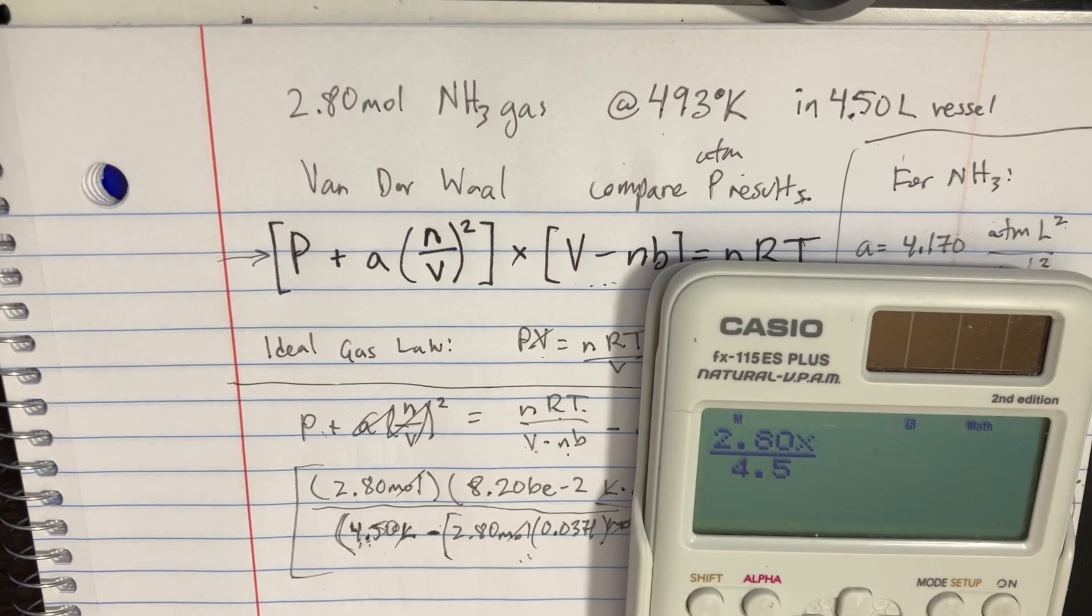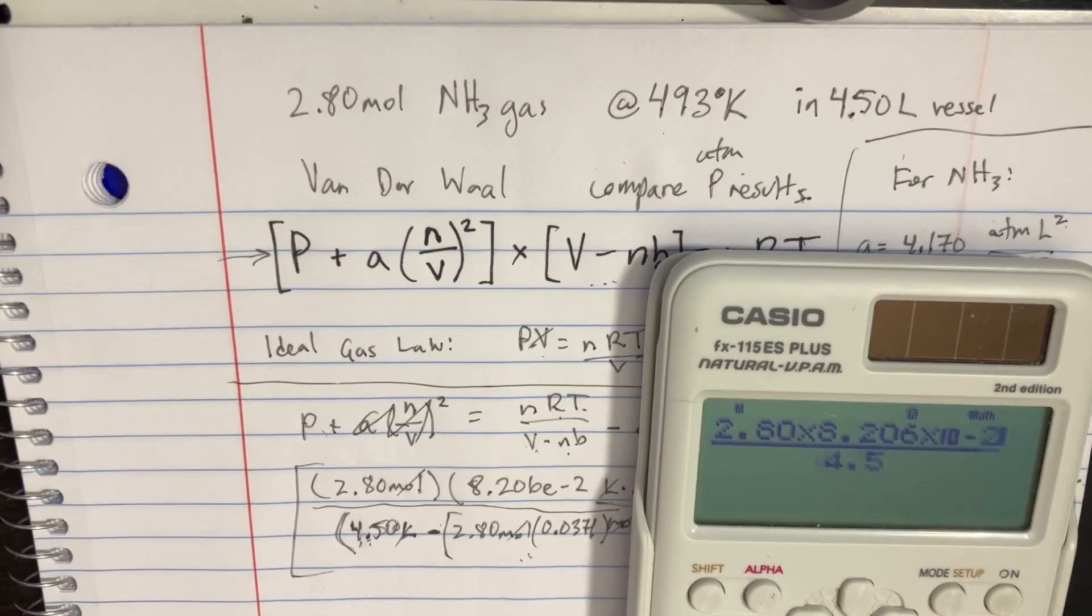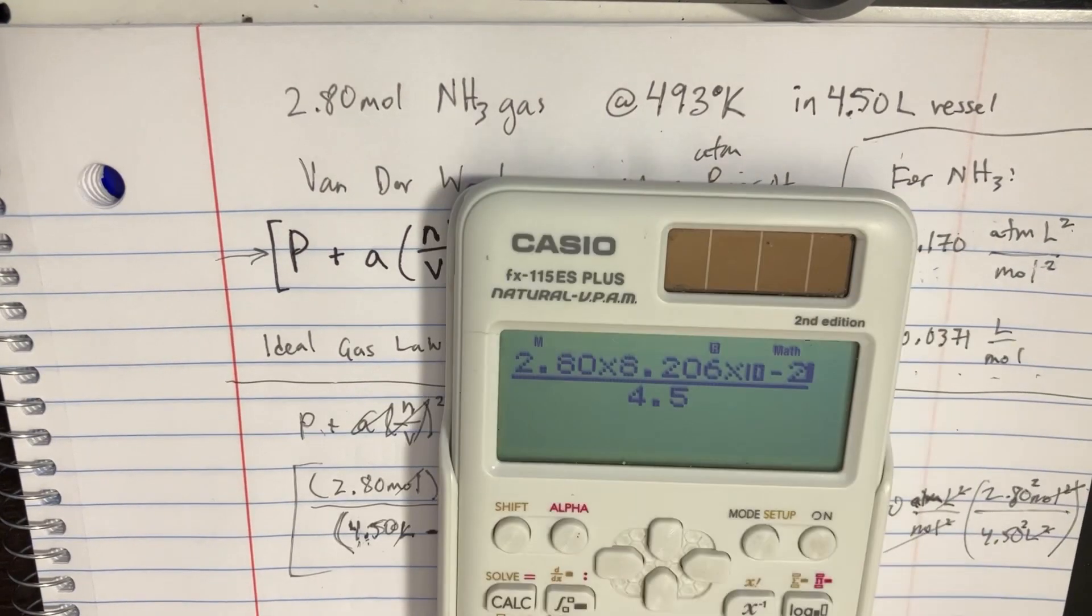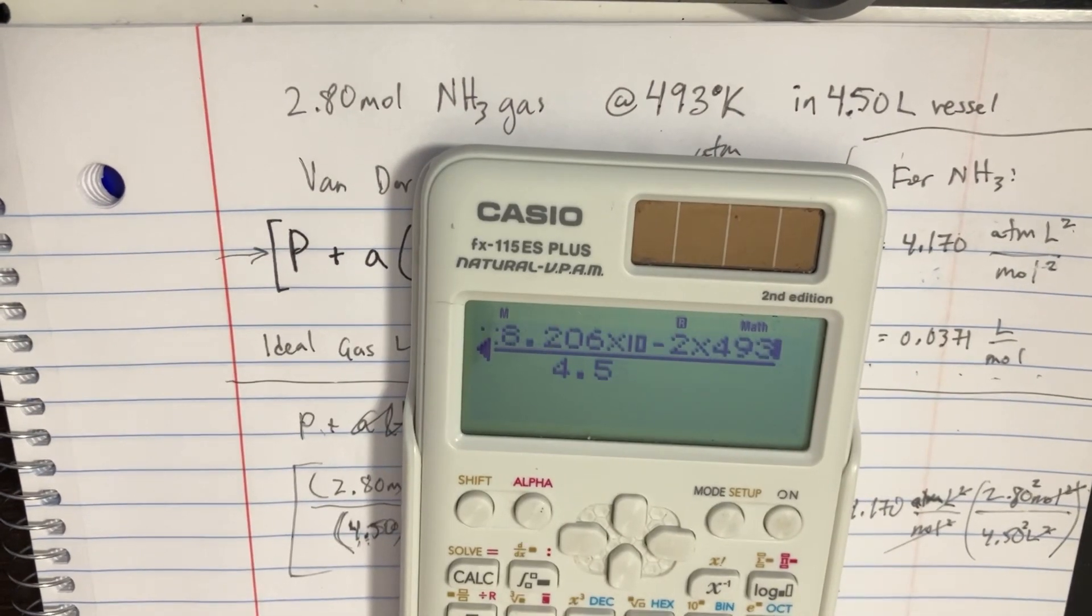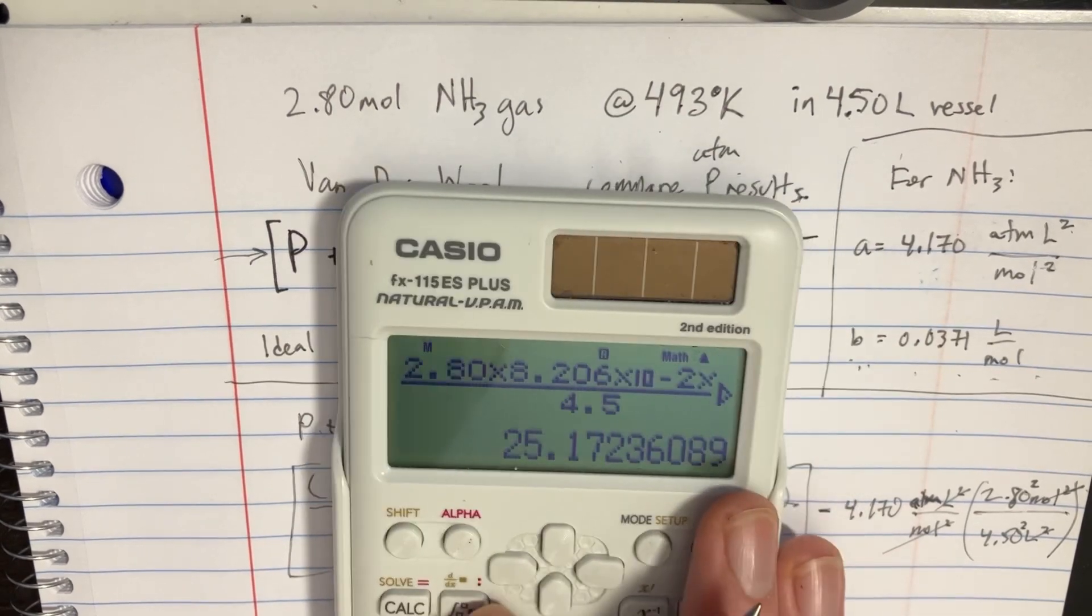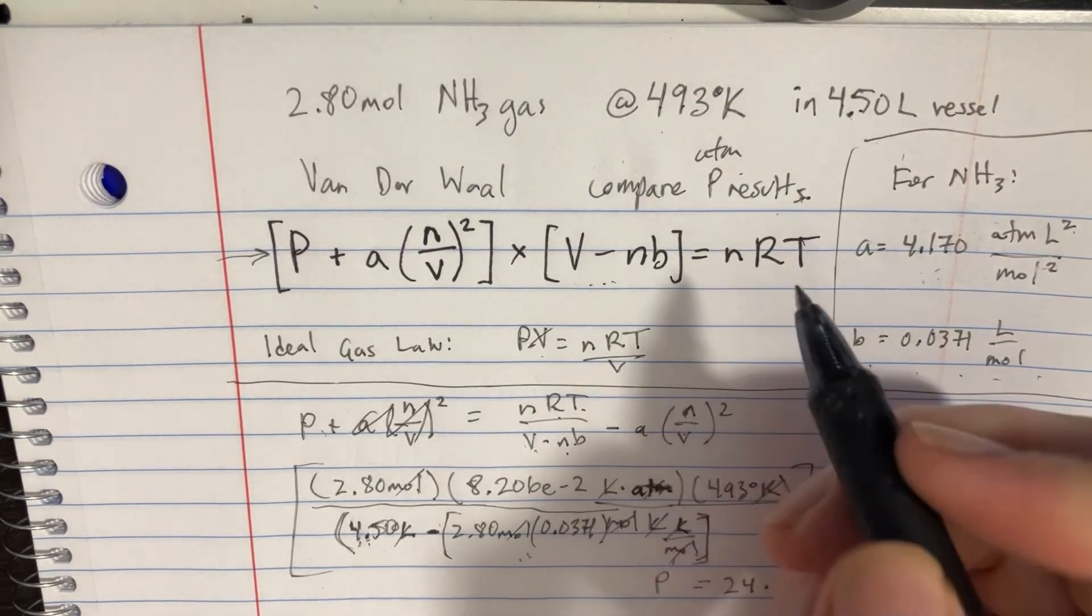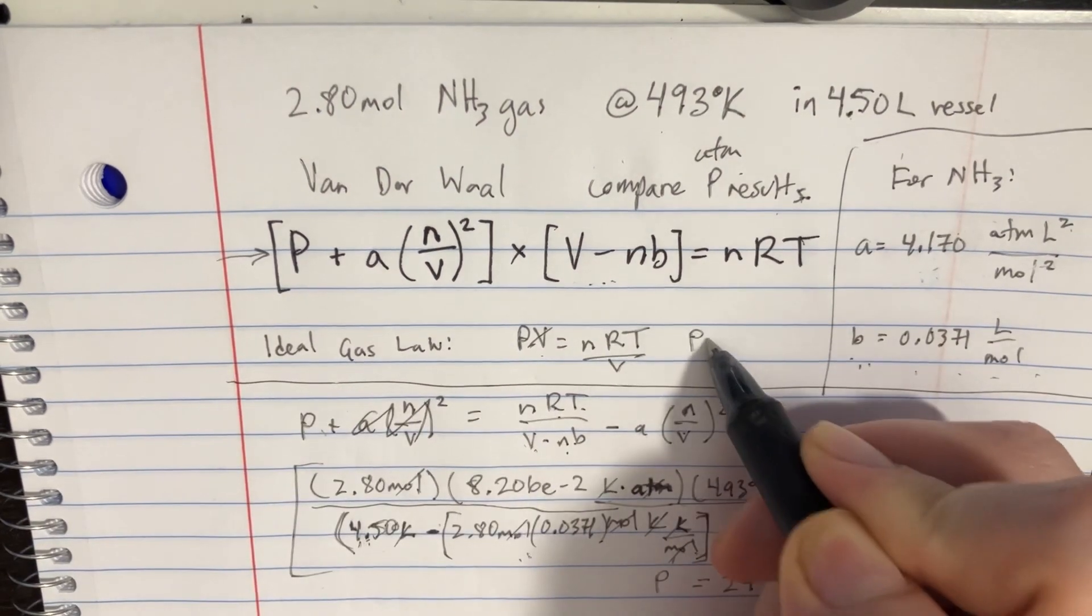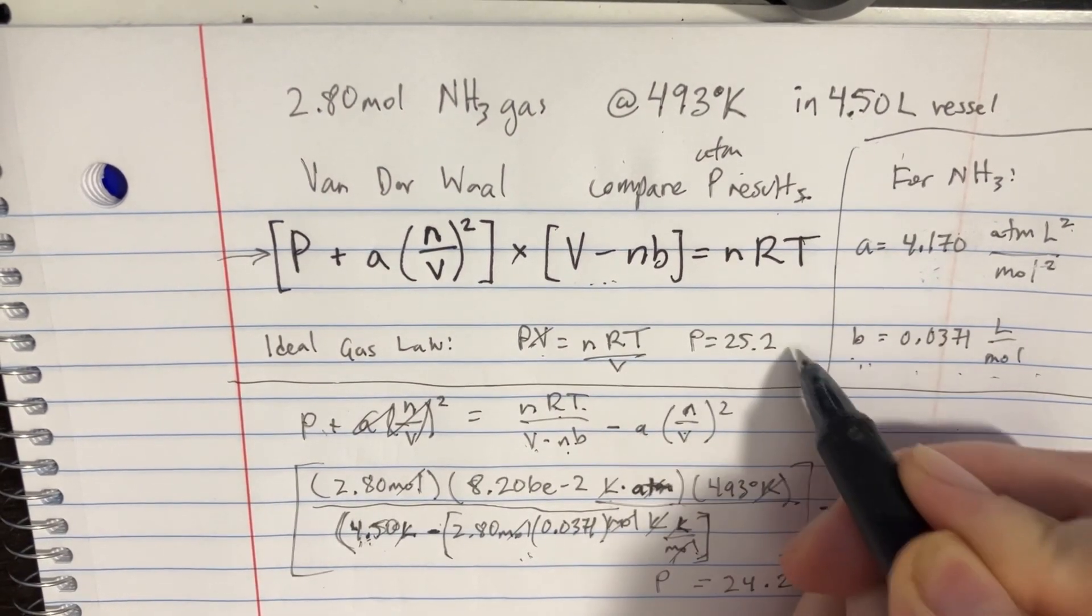And the temperature is still 493. So we basically get 25.2 for the other version, 25.2 ATM.